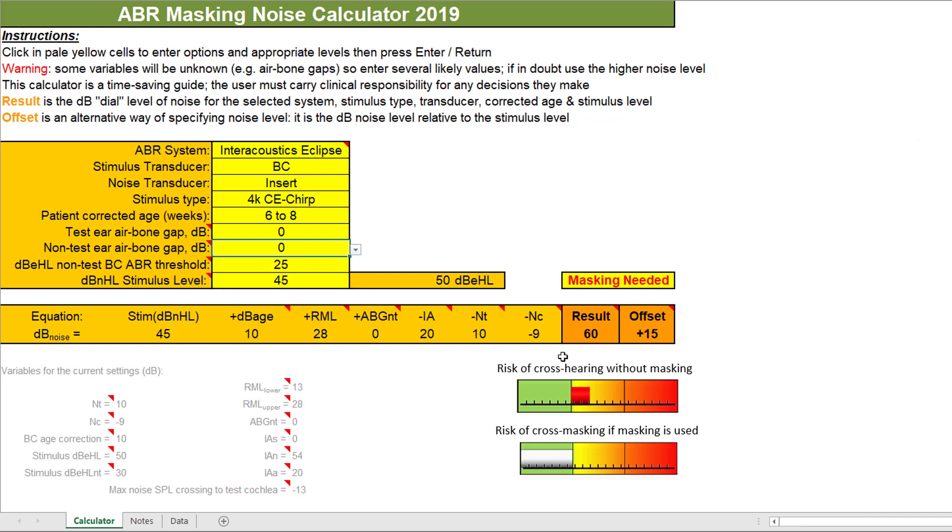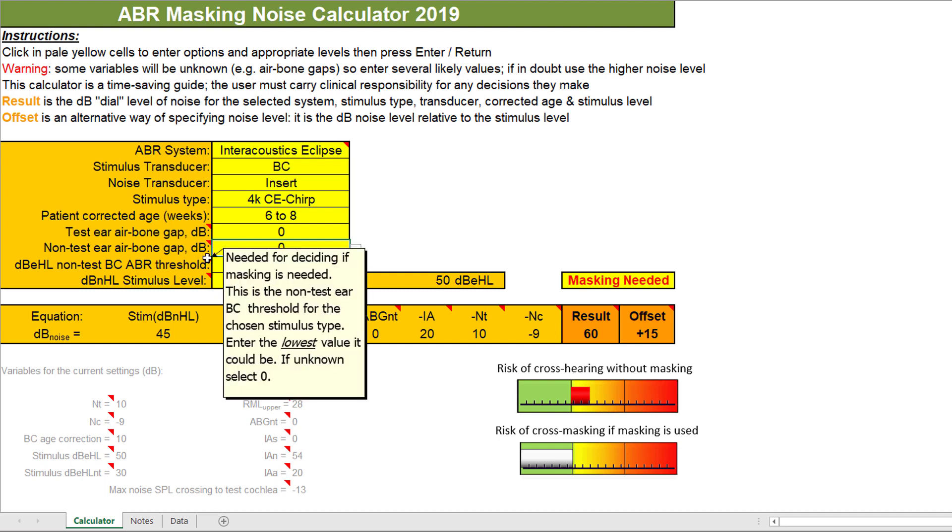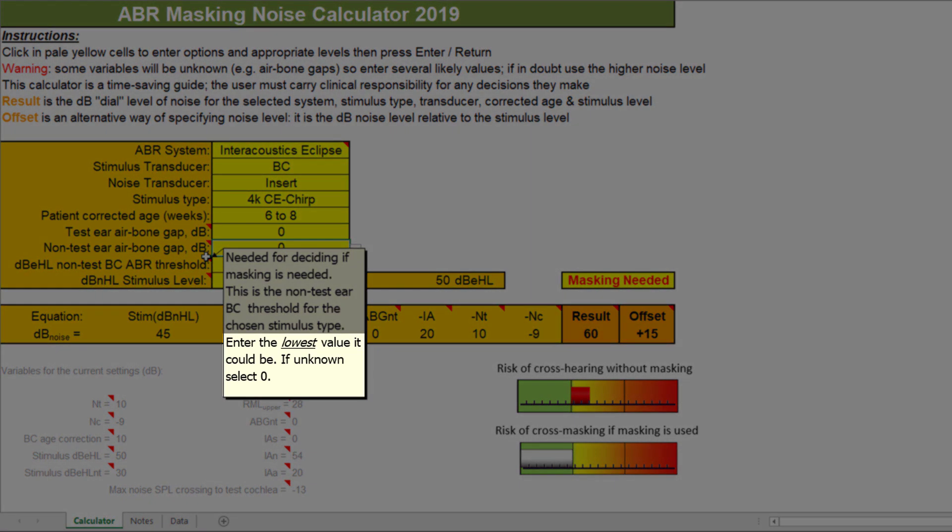Remember, the masking calculator is designed to be used to guide you. It is the responsibility of the clinician to use their clinical judgement when deciding on test strategy. When in doubt, it is recommended to err on the side of caution and to adopt a more conservative approach. For instance, when the bone conduction value for the non-test ear is unknown or you have a minimum response level rather than a threshold, the calculator recommends you enter a value of zero.